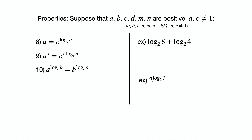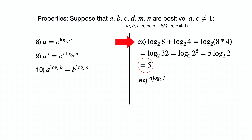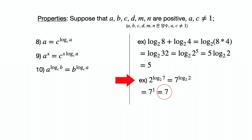Now let's solve some log problems. Log base 2 of 8 plus log base 2 of 4 equals log base 2 of 8 times 4 by property 2. That is log base 2 of 32, which is log base 2 of 2 to the 5th power, so 5 is taken out and it becomes 5 times log base 2 of 2, which equals 5. For the second problem, 2 to the log base 2 of 7 power equals 7 to the log base 2 of 2 power, so the answer is 7.